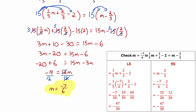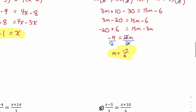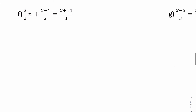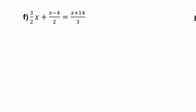M equals negative seven over six, and that can be checked in the original equation. Now let's move on to part F. Once again, I have three fractions. So let's start by getting rid of those fractions by multiplying both sides by the lowest common multiple of 2 and 3. The lowest common multiple of 2 and 3 is 6, so I'll multiply both sides by 6.